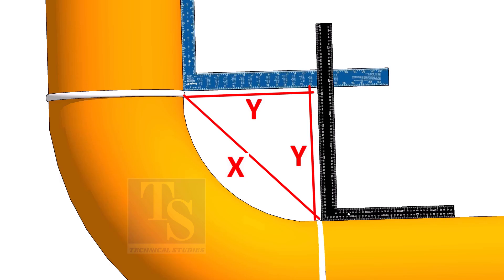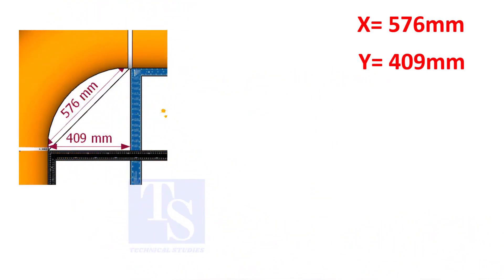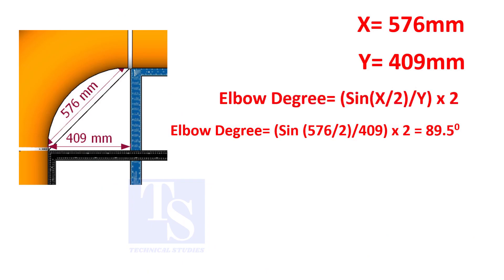Assume that the value of X is 576 and the value of Y is 409 millimeters. Apply the formula. The answer is 89.5 degrees.